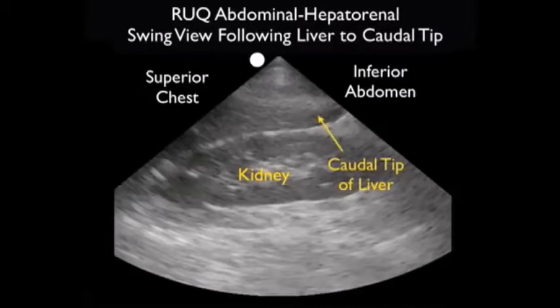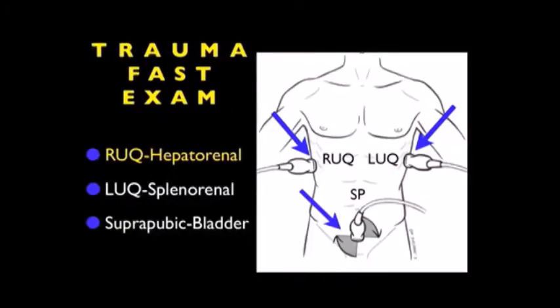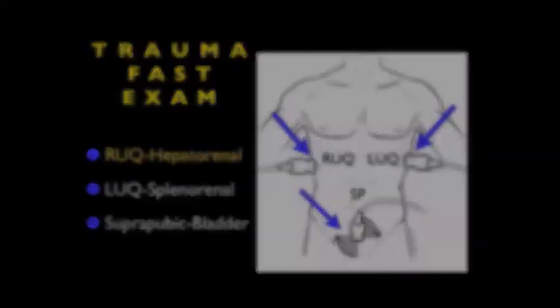The caudal tip of the liver extends almost all the way inferiorly down past the inferior pole of the kidney. It's important to look at that caudal tip of the liver as it represents the beginning of the right pericolic gutter. In conclusion, we've covered part one of the right upper quadrant view of the trauma FAST exam — how to recognize a normal examination looking from the area below the diaphragm, through Morrison's pouch, and terminating at the caudal tip of the liver.